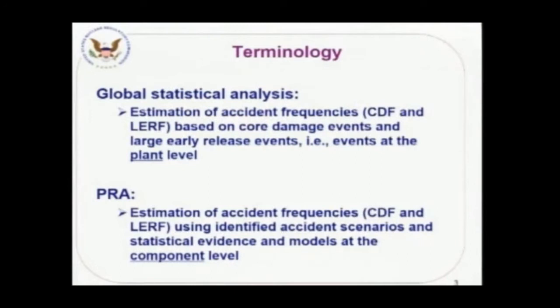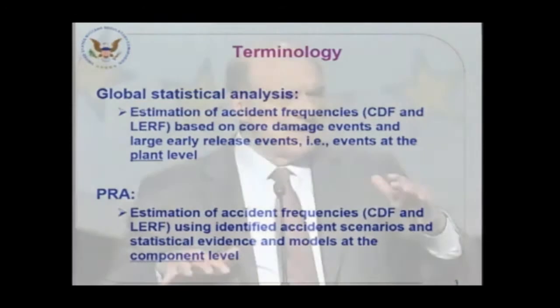I need to explain what I mean by global statistical analysis. We struggled to find better terminology. By that I mean the estimation of core damage frequency or large release frequency using accidents that happened at the high level — at the plant level, like core damage events. PRA also uses statistics, but at a much lower level, at the component level. So that's the big difference: in a PRA we use analysis, we identify accident sequences, and then we use statistical information at the low level of components and human performance sometimes.